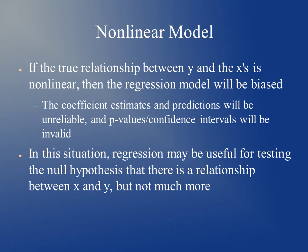One way that these assumptions can be violated is if we have a non-linear model — if the true relationship between y and x's is non-linear. Examples of this would be a quadratic relationship or a threshold relationship where it increases and then tapers off. If that's true, the regression model will be biased because we're just creating a straight line through data that isn't a straight line. The coefficient estimates and predictions will be unreliable and the p-values and confidence intervals will be invalid.